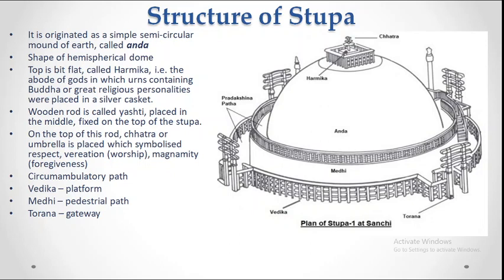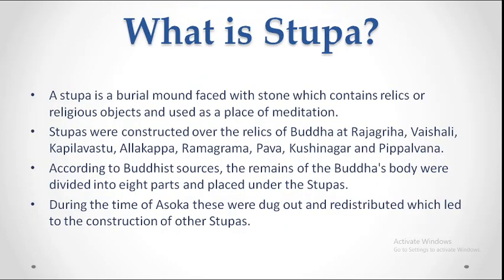The Toran Dwar structure consists of two vertical pillars and three horizontal pillars. These vertical and horizontal pillars are decorated with carvings connected to the stories of Buddha's life and birth — the famous Jataka stories.